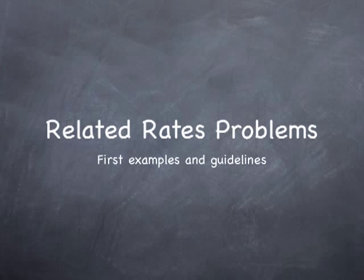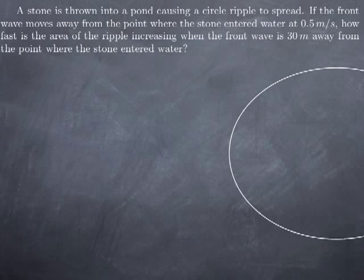So let's see a first example. When throwing a stone into the water, we get a circular ripple that spreads. If the front wave moves away from the point where the stone entered the water at 0.5 meters per second, we want to know how fast the area of the ripple is increasing when the front wave is 30 meters away from the point where the stone entered the water.